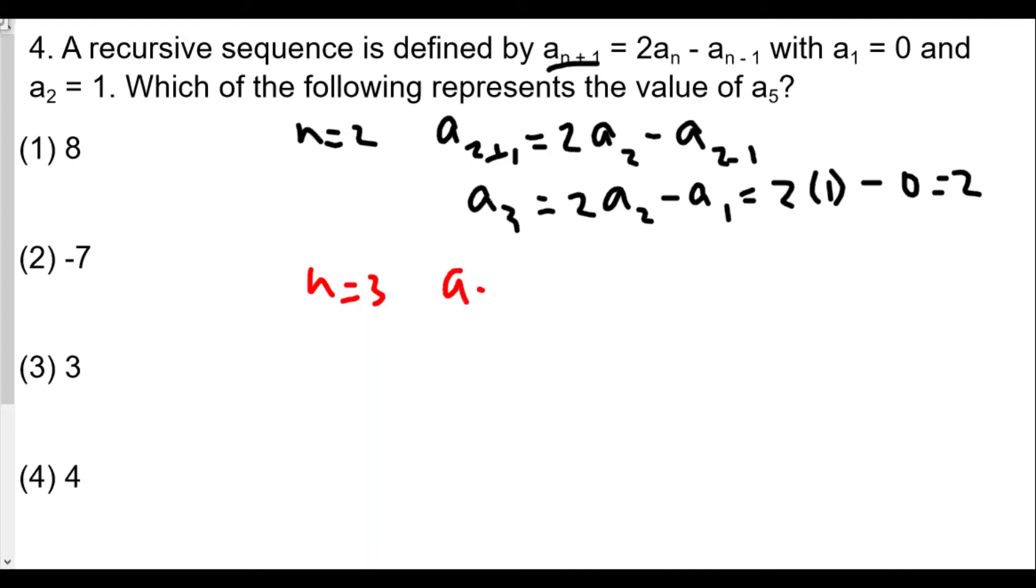To get a4, we plug in a(3+1). The idea is that with the a(n+1), we'll eventually get the fourth term. So we're plugging n into these things. We have a(3+1) is equal to 2 times a3 minus a(3-1), which really means a4 equals 2 times a3 minus a2. Now, 2 times a3, a3 we know is 2, so 2 times 2 minus a2, and a2 is equal to 1, so minus 1. So 4 minus 1 is 3.